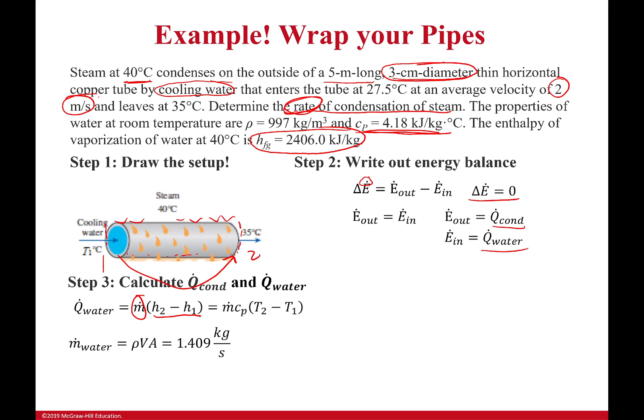The mass flow rate for water or for most fluids, you can find by knowing the density, the velocity, and the area. Velocity was given in the problem statement, diameter was given which gives us the area, and density was also given in the problem statement.